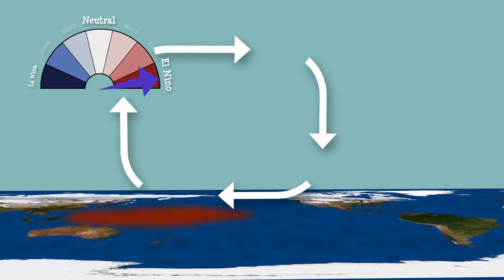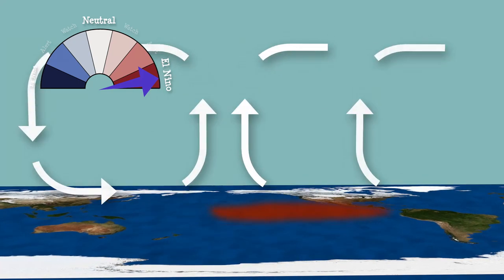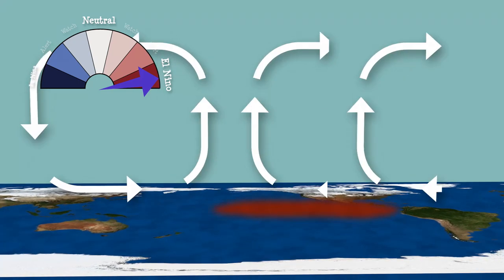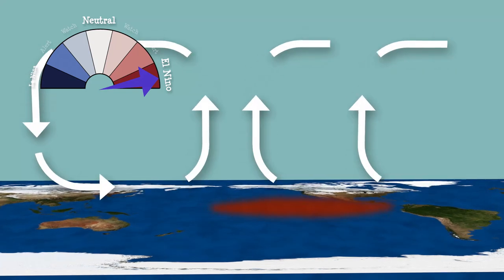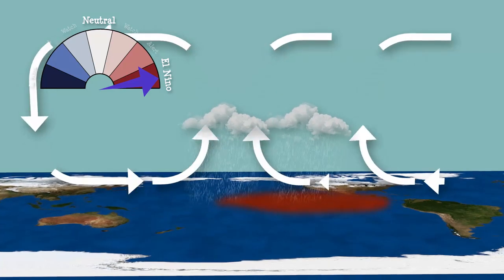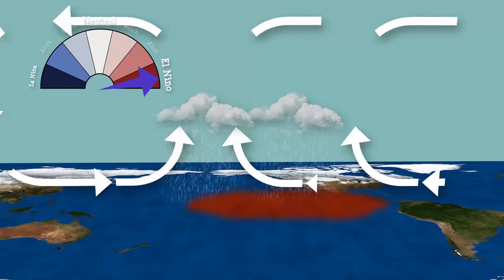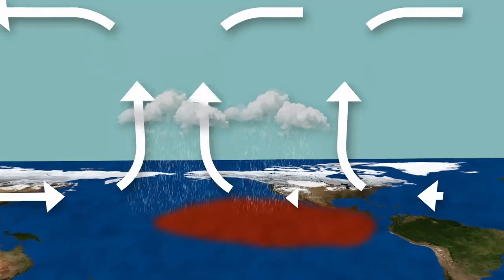Sometimes the winds weaken, and warm water sloshes back across the ocean to the east Pacific. The Walker circulation breaks down, weakening or even reversing the trade winds. Warming of the eastern Pacific accelerates, setting off a feedback loop that keeps most of the rain-producing evaporation in the middle of the Pacific.